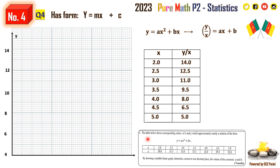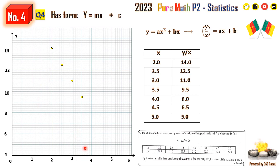The x values range from 0 to 6. We can now plot these points: when x is 2, y over x is 14; at 2.5, it's 12.5 — midway between 12 and 13. At 3, it's 11.0; at 3.5, it's 9.5; at 4, it's 8; at 4.5, it's 6.5; and at 5, it's 5.